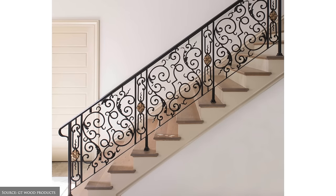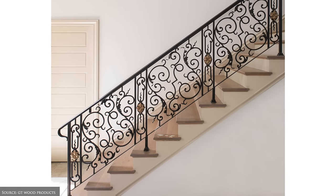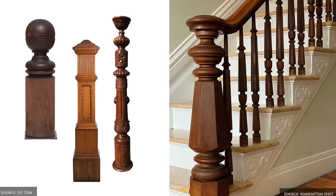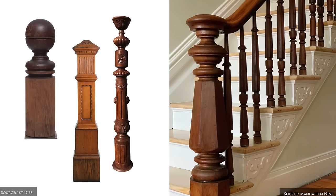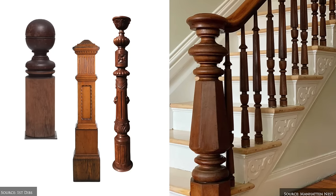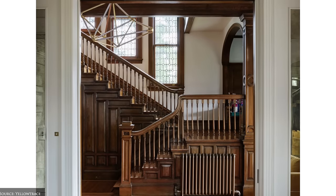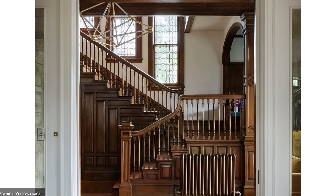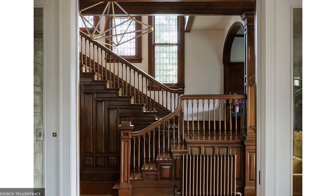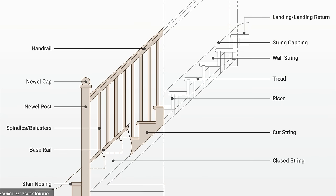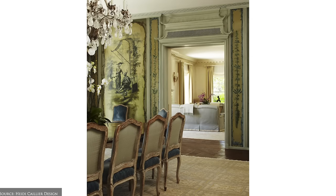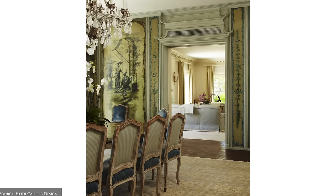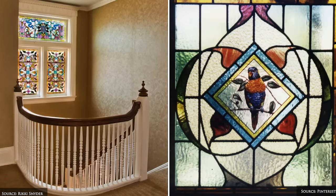Internally, original homes boasted elaborate staircases with beautifully hand-carved balustrades and a very large starting newel. Victorian homes had more complex room layouts, high-pitched ceilings, etched and stained glass windows, and ornate marble, slate or cast iron fireplaces.